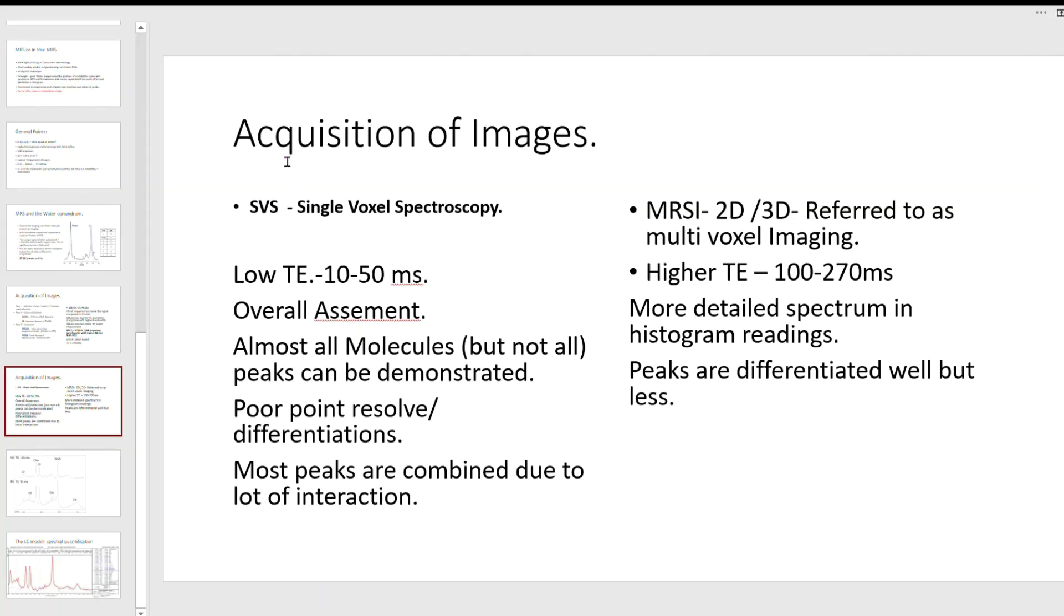As a radiologist we will be generally presented with single voxel imaging and multi voxel imaging. All the previous slides are just the basics of the physics part. Generally we will be seeing a single voxel spectroscopy histogram and a multi voxel spectroscopy histogram. The basic differences are that single voxel spectroscopy, as I mentioned earlier, is acquired using a lower TE technique. You can increase the TE values even in single voxel spectroscopy, but generally single voxel spectroscopy is done in lower TE values so that you will get an overall assessment of almost all the molecules possible. The reason why I mentioned 'but not all' is that there are so many metabolites and other molecules in any part of our body, and spectroscopy will be tailor-made to see certain molecules only.